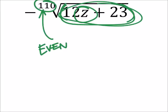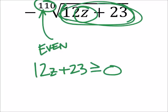Oh yeah, so that means that 12z plus 23, this one needs to be greater than or equal to zero. So when we solve this, we'll subtract 23 from both sides.